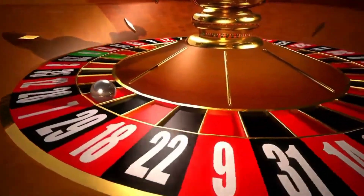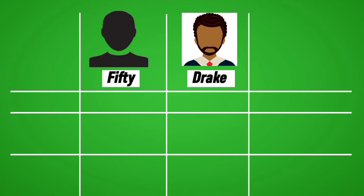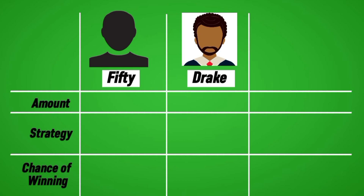Let's consider an example with two individuals — 50 and Drake — heading to the casino with a common goal: to win $100. They each employ different strategies and begin with varying amounts. Drake initiates with $100, opting for a concise approach. He places a one-time bet of $100 on red. If he loses, he quits. However, if he wins, as red pays out 1 to 1, he achieves his objective of $100 and departs.